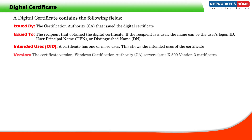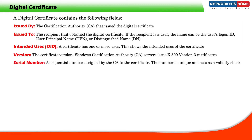Version: The certificate version. Windows Certification Authority Service issues X.509 Version 3 certificates. Serial Number: This is a sequential number assigned by a CA to the certificate. The number is unique and acts as a validity check.